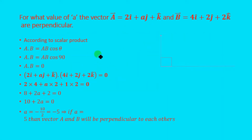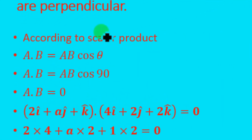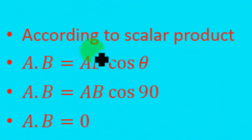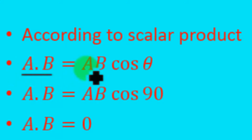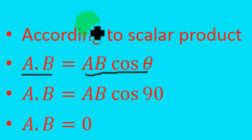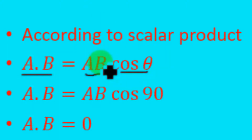According to the scalar product, we know that a dot b is equal to ab cos theta. This is also known as the dot product. Let's consider the first as vector a and the second as vector b.